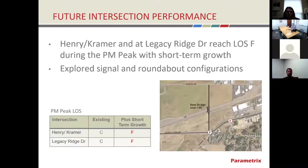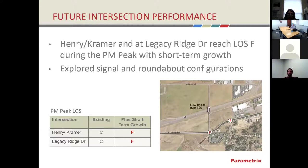We focused on two intersections: the Legacy Ridge Drive intersection and the Henry/Kramer intersection. Today, Level of Service is around the C range at both. With the added growth from all that short-term development, they both move into Level of Service F. What that means is drivers making turns on and off the side streets start to experience longer delays and waits. At that point, we need to look toward mitigations that might help that condition.